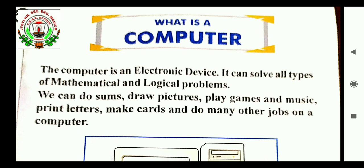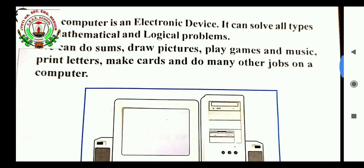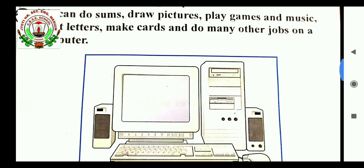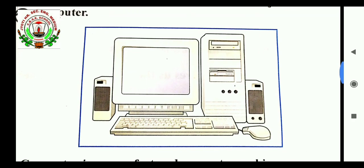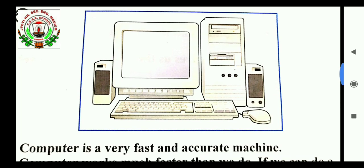We can do sums, draw pictures, play games, music, print letter, make card, and do many other job on computer. And this includes graphics, draw pictures, make card, printing letter. This is all including mails. It's called graphics.